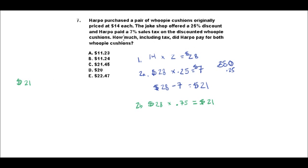So now we've got 21, so what do we do with the $21 that we've got there? They say that Harpo paid 7% sales tax on the discount of whoopee cushions, and so they want to know how much including the tax did Harpo pay for both whoopee cushions. So you've got to include the tax in order to get the correct answer.